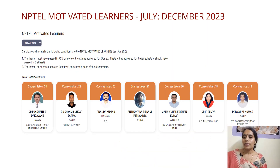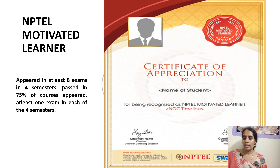Coming to NPTEL Motivated Learners: the student should appear in at least 8 exams in 4 semesters and pass 75% of those exams. In each of the 4 semesters, they should pass at least 1 exam. This is a continuous learning requirement — there should be no gap between semesters. The certificate is the same format as others, with the only change being the NPTEL Motivated Learners badge.